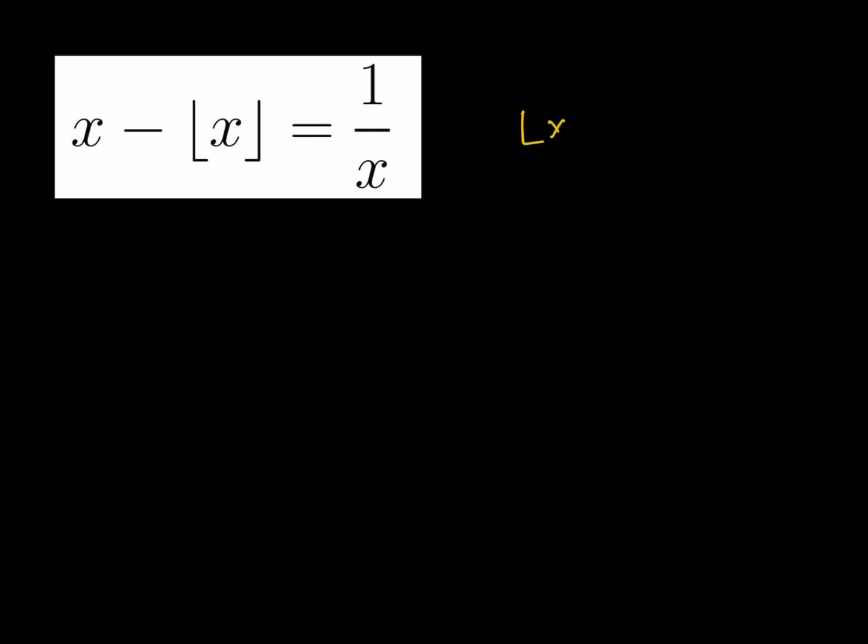We have x minus the floor value of x is equal to 1 over x. A couple of things to note about the domain of this function before we start solving, because that's going to play an important role at the end. Notice that the floor value of any x is going to be less than or equal to x, because the floor value is basically the greatest integer function.